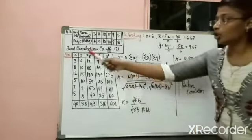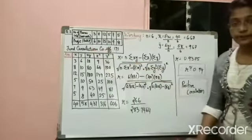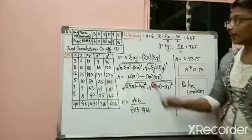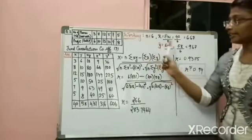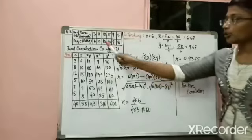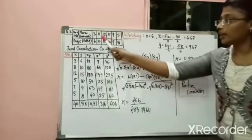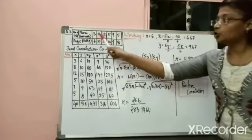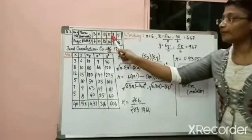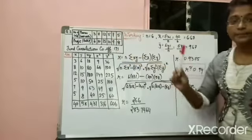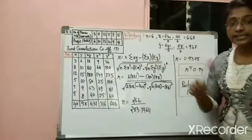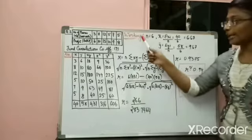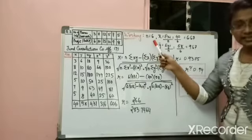Now you have to find out the correlation coefficient for this sum. Let us find out the data that has been given to you. This is given for 1, 2, 3, 4, 5, 6 months — so the last 6 months data has been given to you, and n would be 6.